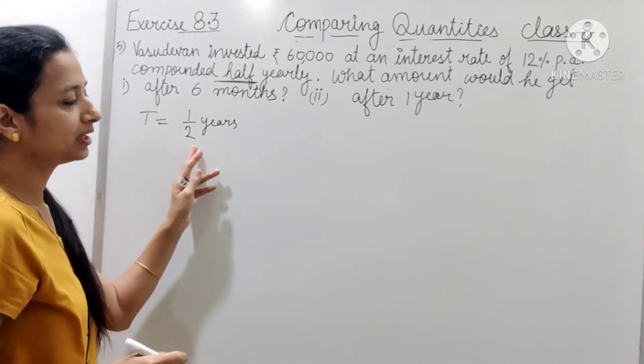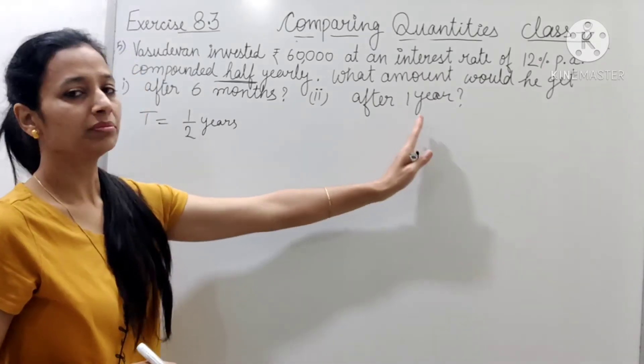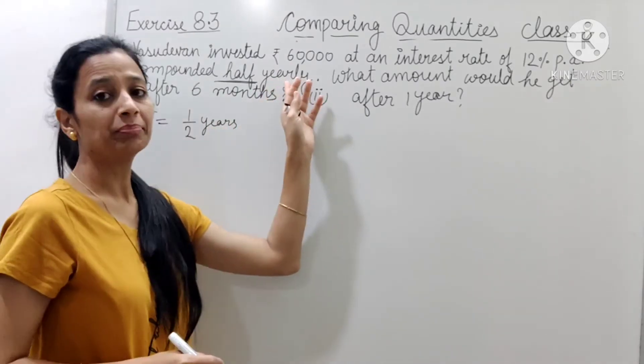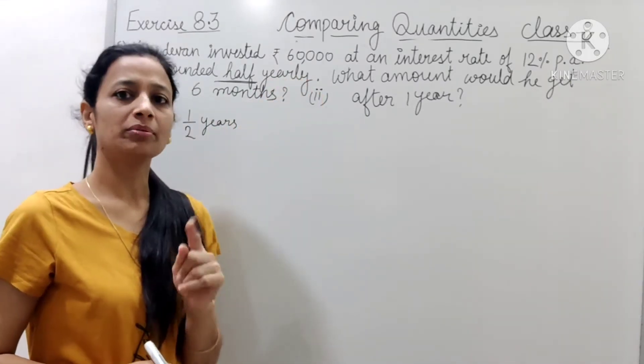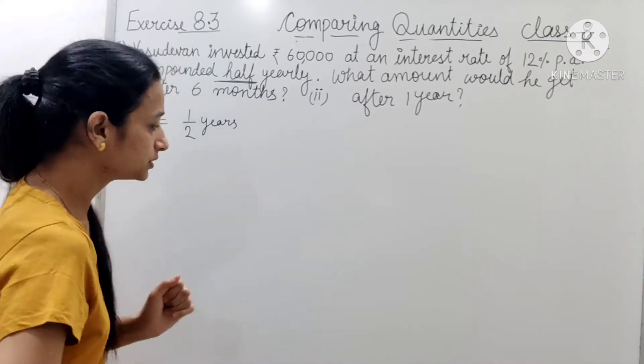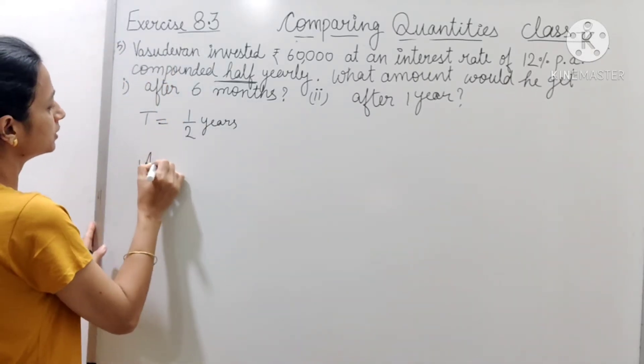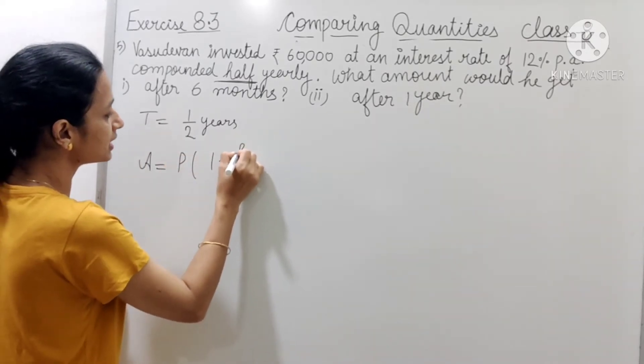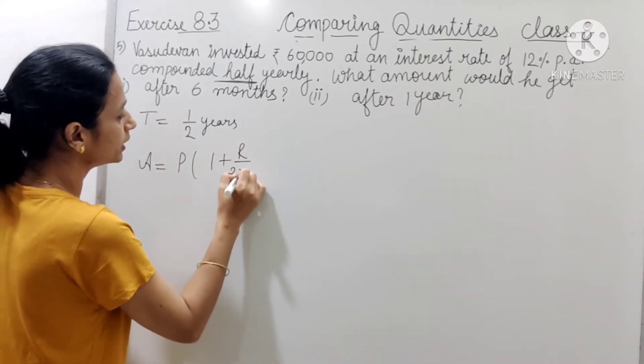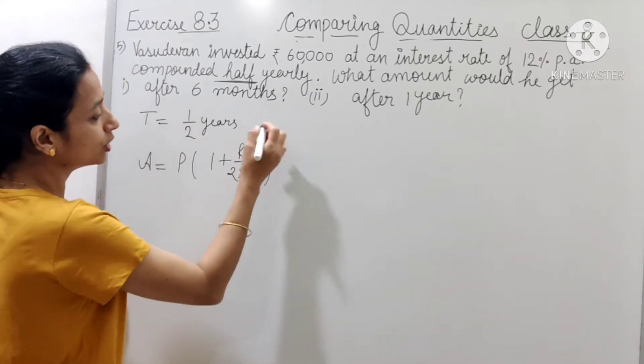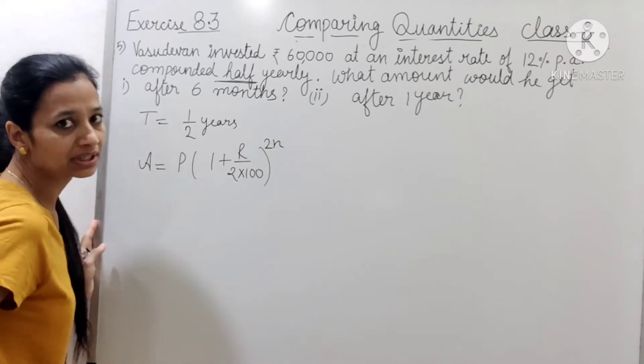Tho abhi pehle hume iske liye nikaalte hai, phir hume iske liye dekhte hai. Tho pehle yaaha se nikaalenge, toh kyunki compounded half yearly nikal raha hai, toh hume kiska formula lagana hai nikaalne ke liye? Half yearly vala. A equals to P 1 plus R upon 2 into 100. Rate of interest half ho jata hai, or time double ho jata hai.